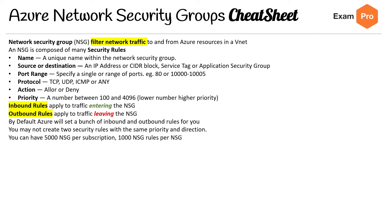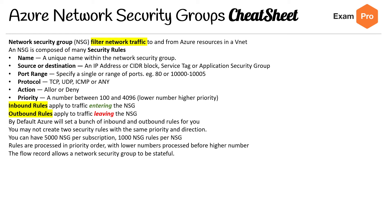That's a lot — you'd have to be a pretty big company to run out of those. Rules are processed in priority order, with lower numbers processed before higher numbers. The flow record allows a network security group to be stateful.